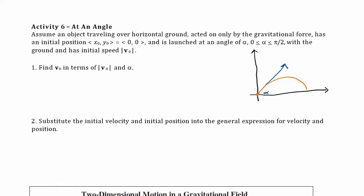The initial velocity vector — let's call it v sub zero — is at an angle theta (between 0 and π/2) with the horizontal. How do we write this initial velocity vector in terms of components? We want a formula for that initial velocity vector in terms of its magnitude and the angle, which we'll call alpha.